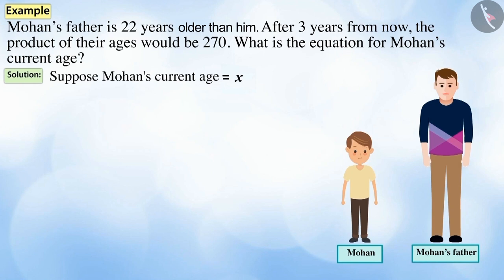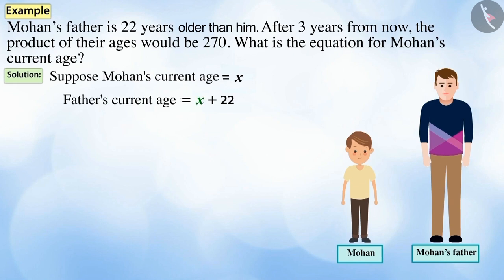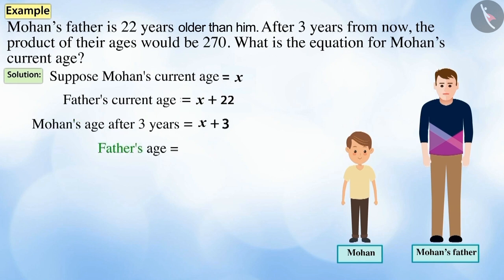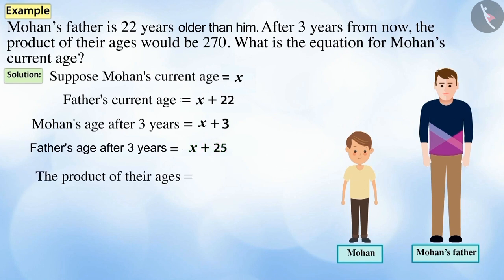Let Mohan's current age be x years. Then his father's age would be x plus 22 years. Mohan's age after 3 years would be x plus 3, and his father's age after 3 years would be x plus 22 plus 3, that is x plus 25. Therefore, the product of their ages equals (x + 3) times (x + 25).